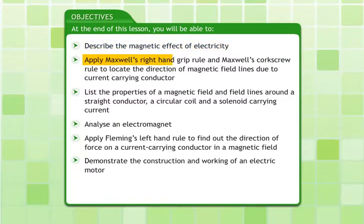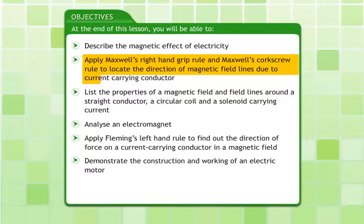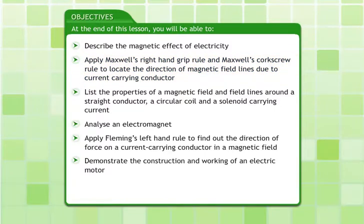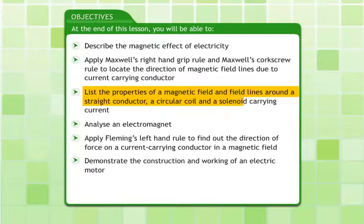Apply Maxwell's right-hand grip rule and Maxwell's corkscrew rule to locate the direction of magnetic field lines due to a current carrying conductor. List the properties of a magnetic field and field lines around a straight conductor, a circular coil and a solenoid carrying current.